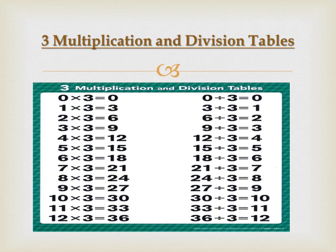You can notice that in the division table, greater numbers are written first, then the division sign, then the number by which we are dividing, then the equals sign, and then the answer. In multiplication you multiply two numbers to get a greater number, but in division you divide a greater number by a smaller number and get a smaller answer.